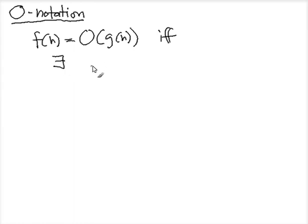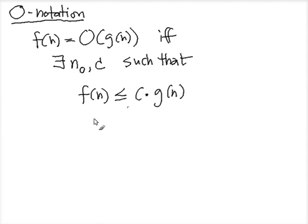So we say that f(n) is in the order of g(n), O of g(n), if and only if we have two positive numbers, n₀ and c, such that f(n) is at most c times g(n) if n is at least n₀.